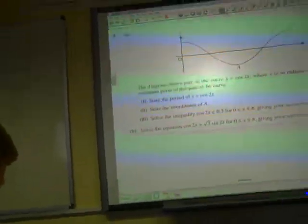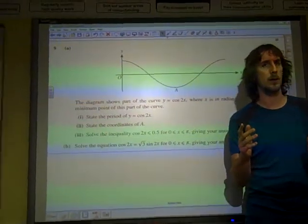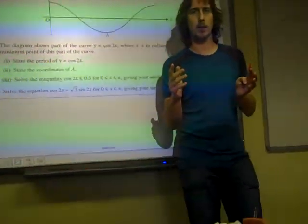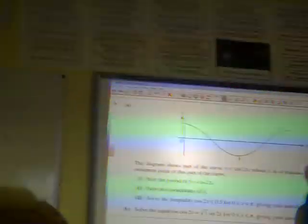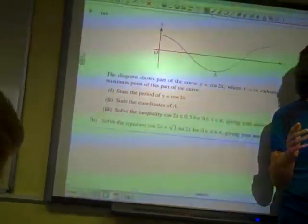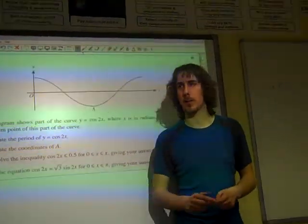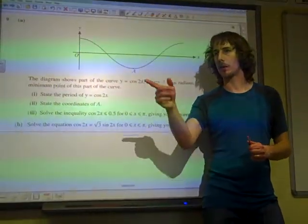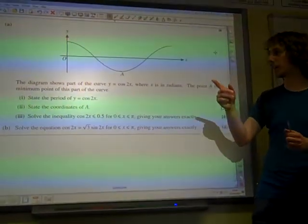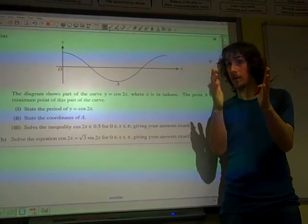State the period of y = cos(2x). Well, this is going back to our transformations. If we had cos(2x), what's happened to cos(x) to go to cos(2x)? How would you describe that transformation? A stretched scale factor of 1 over 2. So everything is squashed in that way.